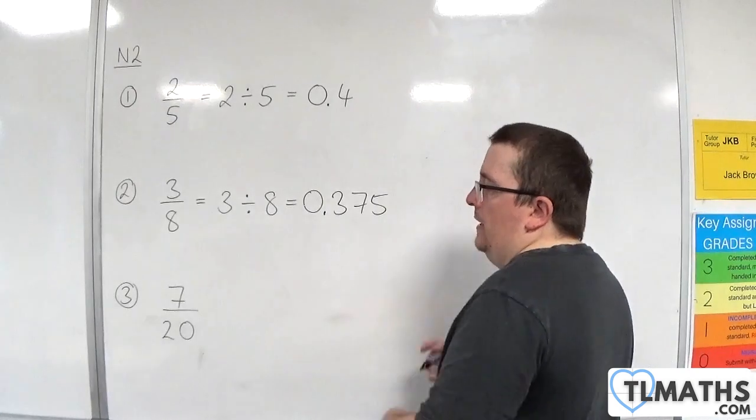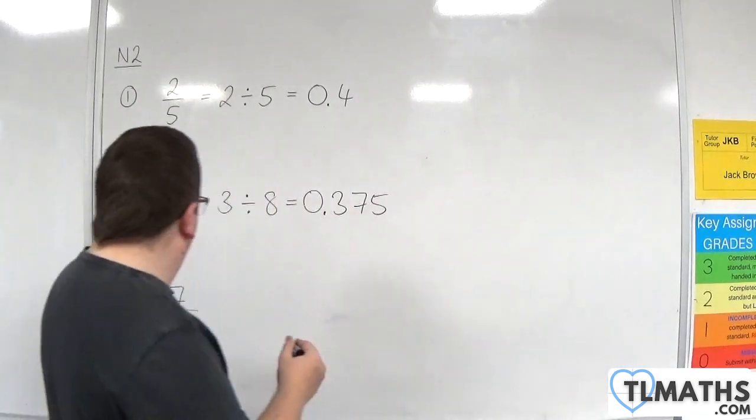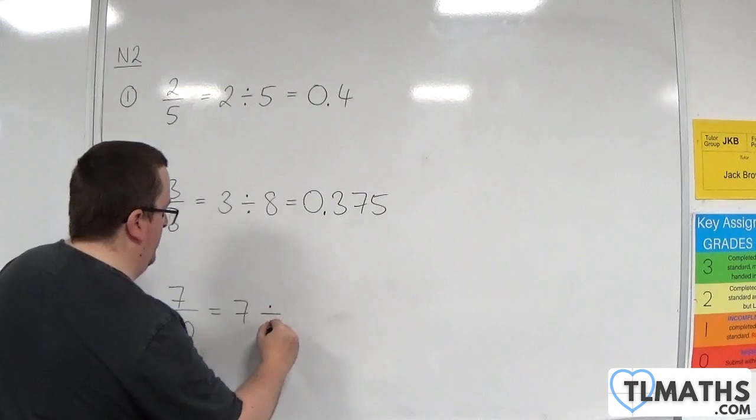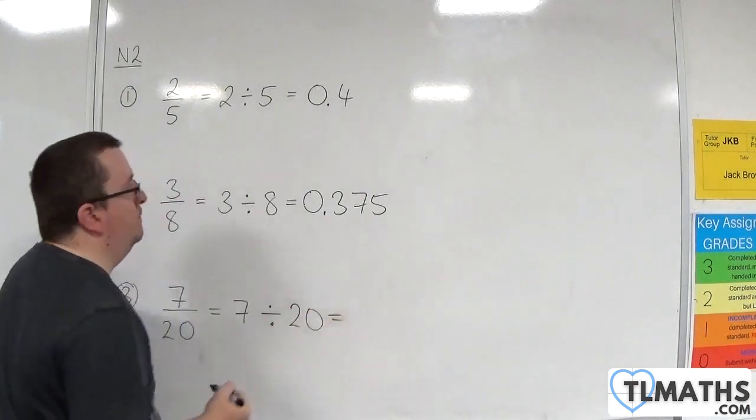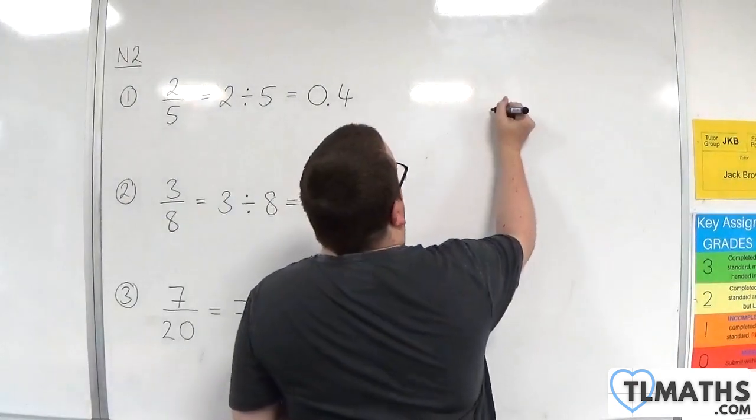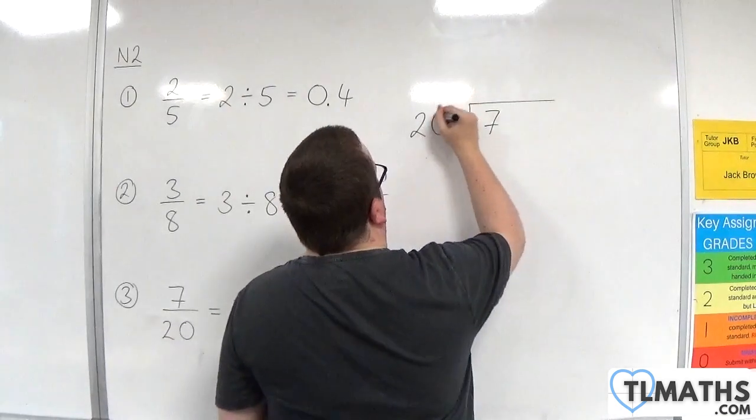The last one is 7 over 20. So, seven divided by 20.